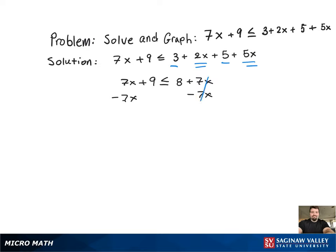But interestingly enough, all the variables have been eliminated from the inequality. Now we're just left with 9 less than or equal to 8, which is not true, which is why it's a no-solution problem.